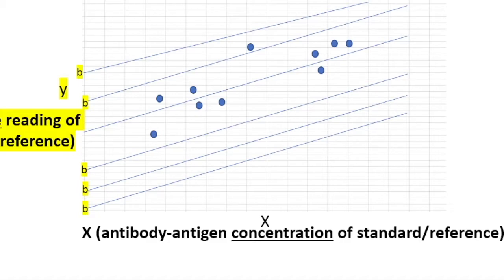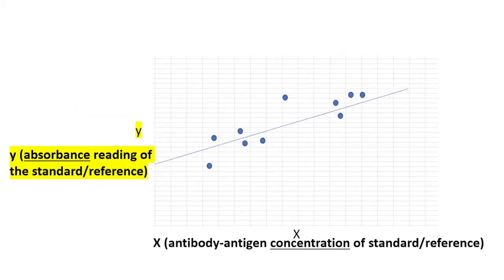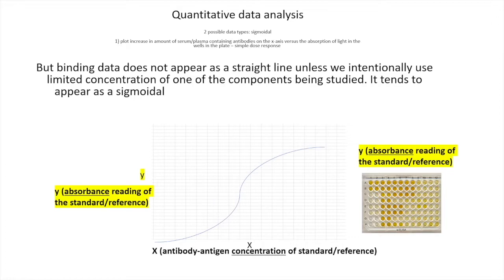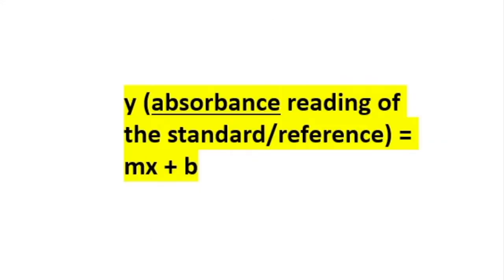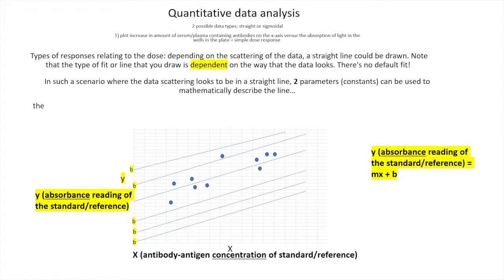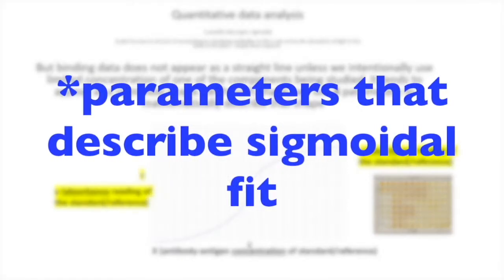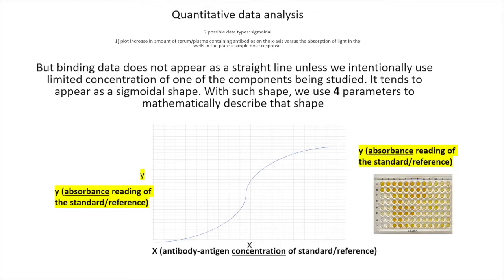Unless you're using a very limited range of concentrations, responses are unlikely to fit a straight line — they more likely follow a sigmoidal, S-shaped curve, like a dose-response curve. That S-shape is analyzed differently because it is not described by just two constants (slope and y-intercept). There are four constants needed, and so that's the four-parameter logistic (4PL) model. It turns out the four parameters are needed simply to fit that shape.